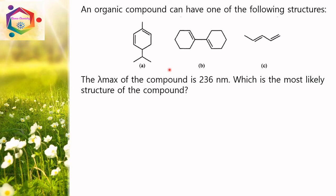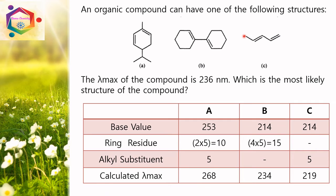Let us calculate the lambda max for each compound. Structure A is a homoannular diene with 2 ring residues and 1 alkyl substituent. Structure B is a heteroannular diene with 4 ring residues. Structure C is an acyclic conjugated diene with 1 alkyl substituent. For structure A (homoannular): base 253 + 2 ring residues (10) + 1 alkyl substituent (5) = calculated lambda max 268 nm.